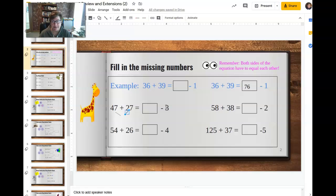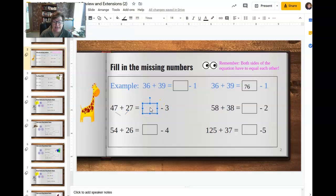74 plus 3, so this would be 77. So 77 minus 3 equals 74. 47 plus 27 equals 74. You want both sides of the equation to equal each other.